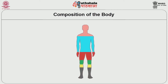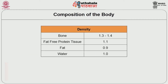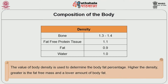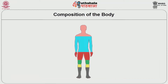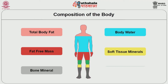Various techniques are available to measure the body components. The 4 major body components of interest are Total Body Fat, Fat Free Mass, Bone Mineral and Body Water, which have different densities. The density is 1.3 to 1.4 for bone, 1.1 for fat-free protein tissue and 0.9 for fat when compared with 1, the standard density for water. The value of body density is used to determine the body fat percentage. Higher the density, greater is the fat free mass and a lower amount of body fat. The 6-component model of body composition usually measured are Total Body Fat, Fat Free Mass, Bone Mineral Content, Body Water, Soft Tissue Minerals and Glycogen.